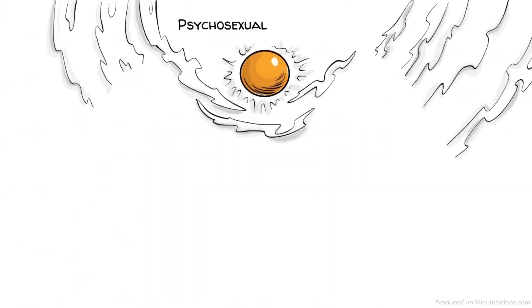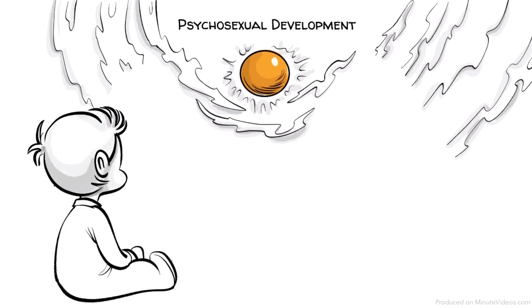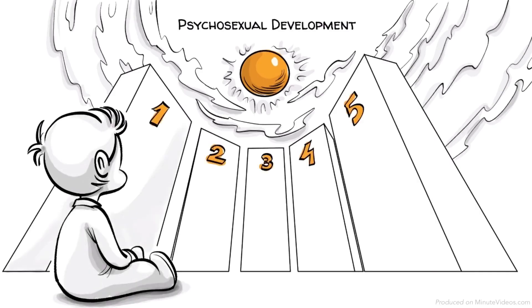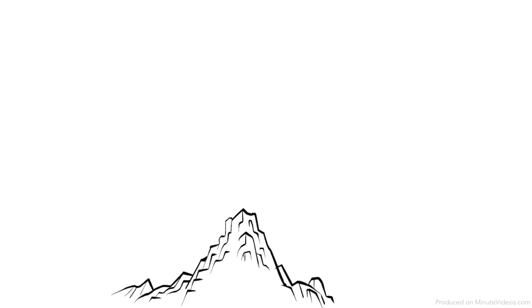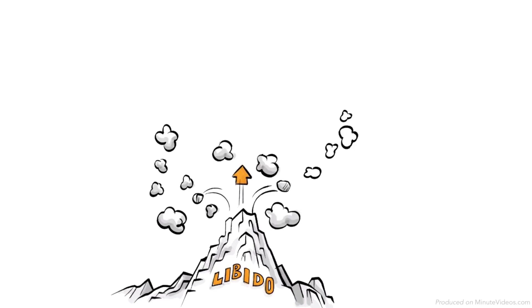Freud's theory of psychosexual development claims that as we grow up we pass through five critical phases. Our sex drive, which Freud called the libido, focuses in a different erogenous zone at each phase.